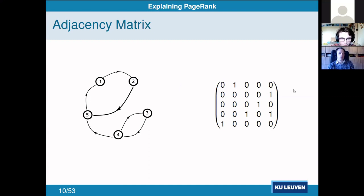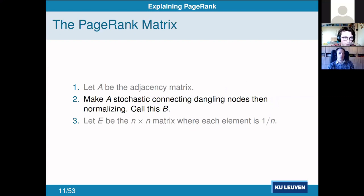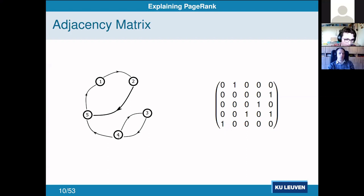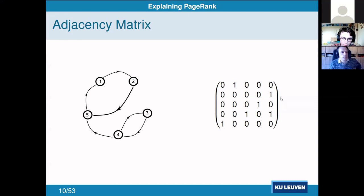Because we're working with probabilities, we need this matrix to be stochastic. Node four has two edges leaving it — to three and to five — so its row has two ones, meaning the rows don't add up to one and the matrix is not stochastic. This makes the vector we multiply by it no longer a proper probability vector.